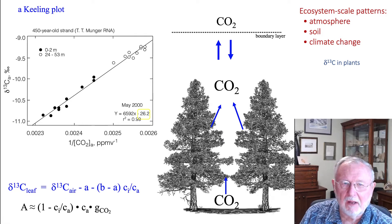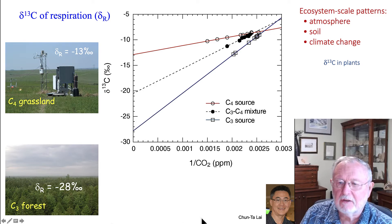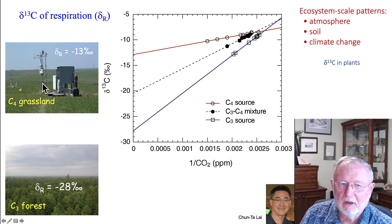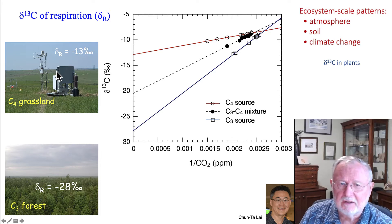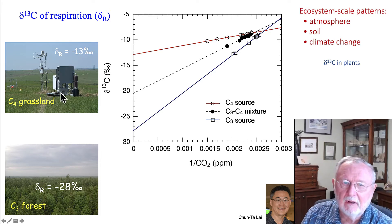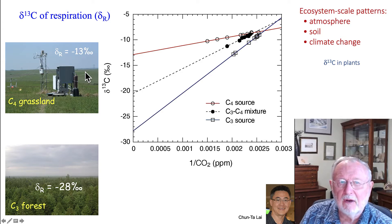This Keeling Plot observation has allowed lots of ecosystem-scale measurements, and one of the first people to capitalize on this was Chuntau Lai. Chuntau Lai set up a series of sampling systems in different ecosystems across the United States, so you could look at C4 grasslands and C3 forests and plot the relationship between CO2 and carbon isotope ratio by collecting flasks and analyzing them back in the laboratory. This is a foundation that has now become much more common in NEON, where all NEON sites and most AmeriFlux sites have a system like this to measure the isotope ratio of ecosystem respiration.